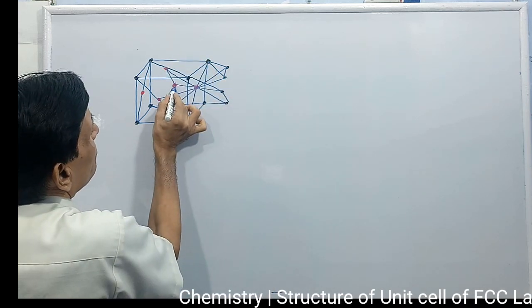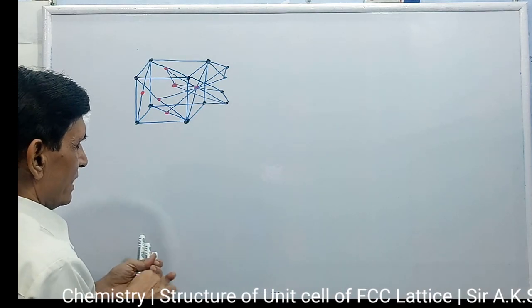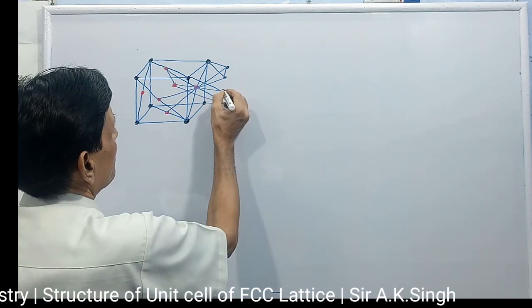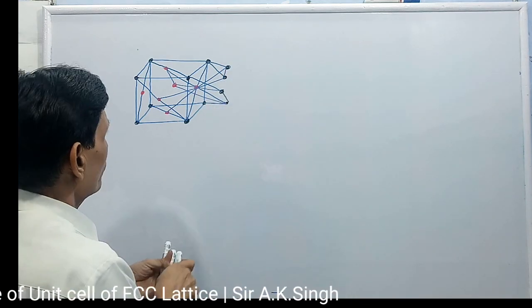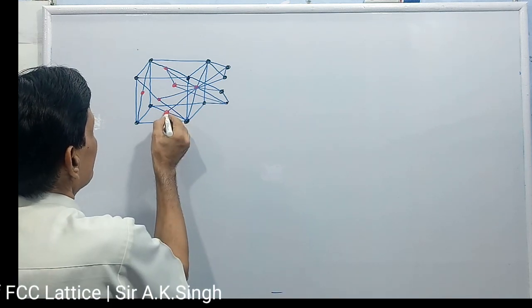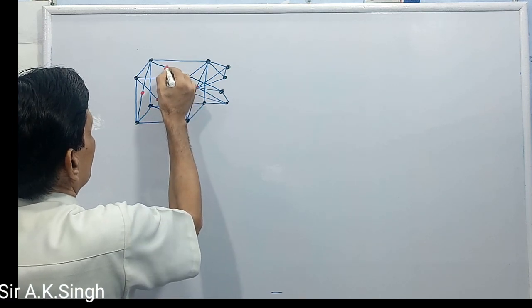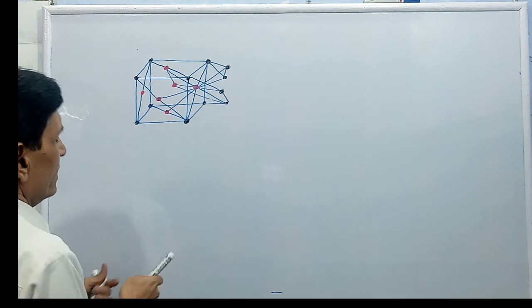Then you will get one unit cell of copper. In this unit cell, unit cell of copper, now this red color particles are at the face center.